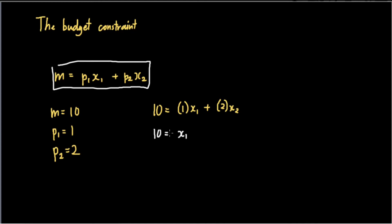On the other hand, we can repeat this process for x sub two, and what we find is that 10 would now be equal to two times x sub two. And so x sub two would be equal to five. This is the maximum quantity of good two that the consumer can buy.